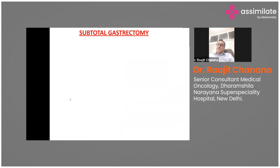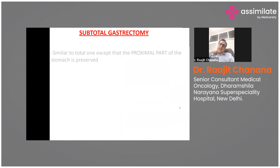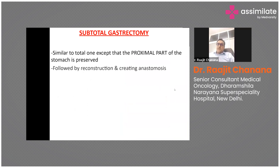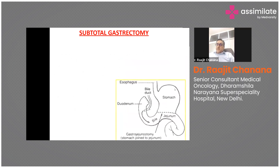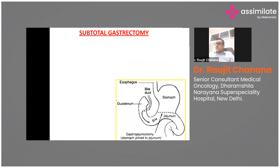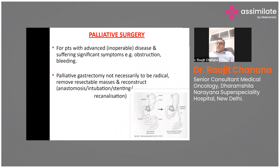Subtotal gastrectomy is similar to total gastrectomy except that the proximal part of the stomach is preserved. It is done usually in distal cancers, followed by reconstruction and anastomosis. In gastrojejunostomy, the remaining part of the stomach is joined to the duodenum.